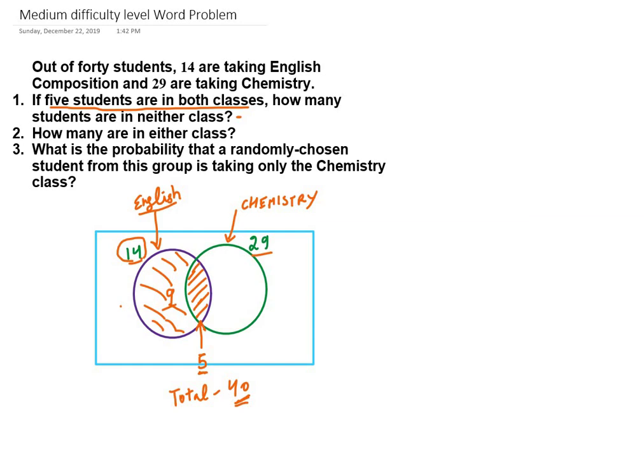9 students are there who have taken English but not Chemistry. Similarly for Chemistry, if there are total 29 students and 5 are common to English and Chemistry, how many will be there having only Chemistry? 29 minus 5, which is 24. In the first problem they have asked how many